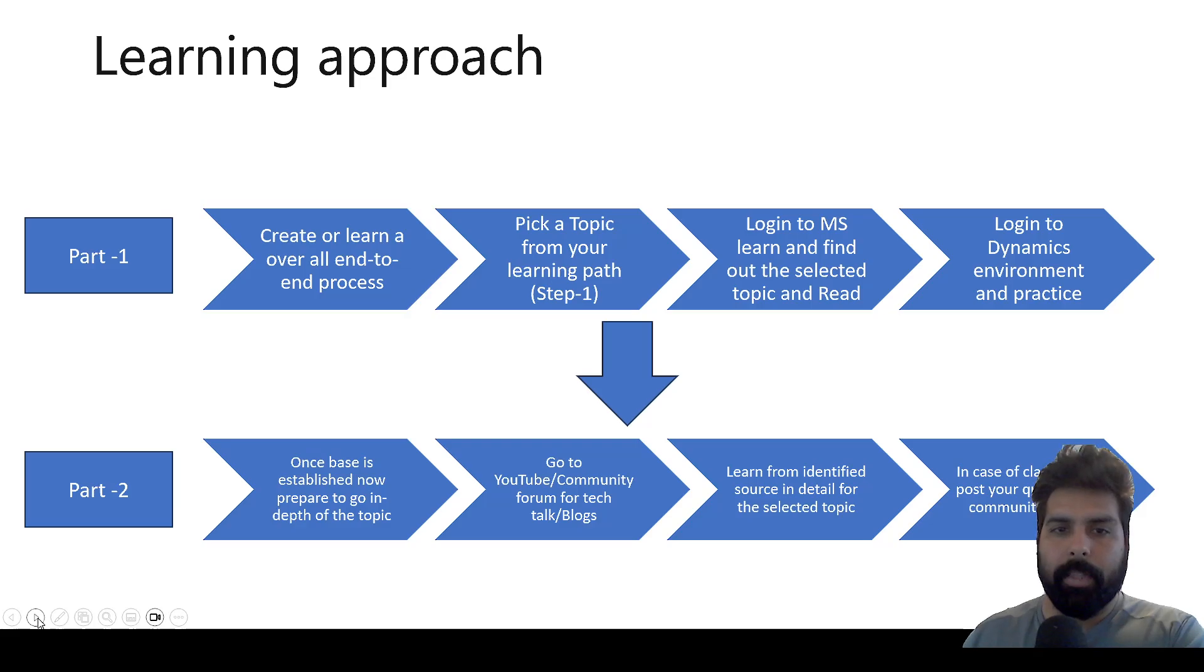So in part one, what you should start with is create your own learning overall end-to-end process which you want to learn. So for example, you have decided general ledger, and under general ledger you've decided you're going to work on chart of accounts learning. So what you can do next is pick up a topic, which is your chart of accounts or financial dimensions or the purchase order creation or any of the topics which you have decided. So first decide the overall end-to-end process. It can be a module or the process like procure to pay, order to cash, record to report, or a topic like chart of accounts. So you pick up that topic first from your learning.